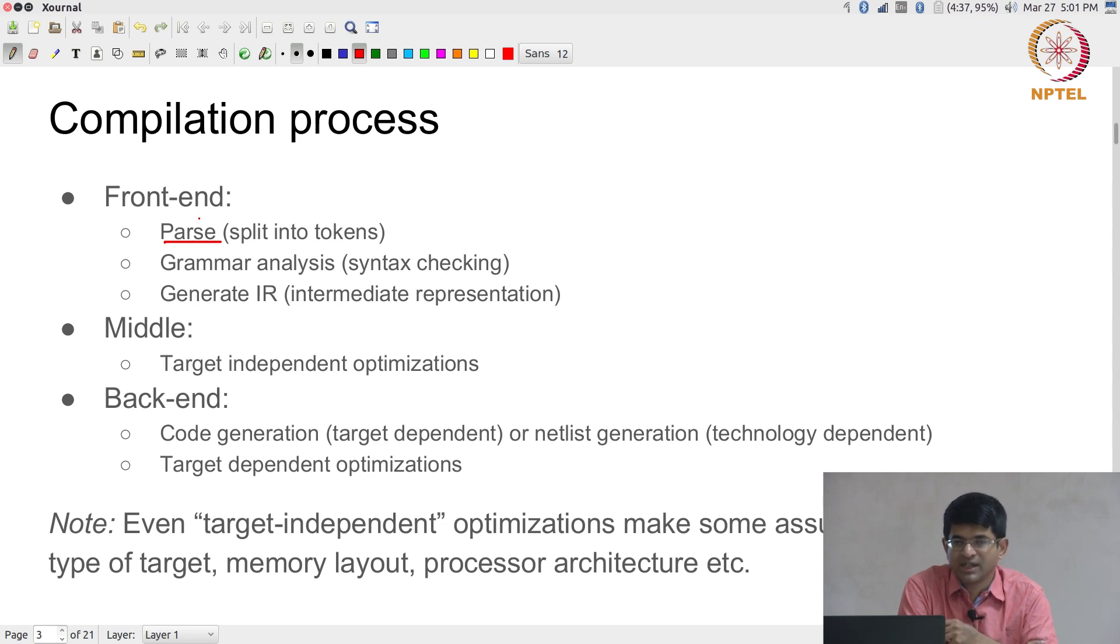The middle portion is the one that does a lot of the different kinds of optimizations on the code. It basically takes the intermediate representation that has been generated and modifies it in various ways. What are those modifications? We will look at many of the modifications, of course. We will not be looking at intermediate representations because that is generally hard to understand. I will be explaining all the optimizations with regard to a generic C type of language, but the meaning and how it applies to the case of intermediate representation should be fairly clear.